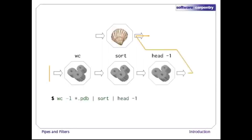And if we run 'wc -l *.pdb | sort | head -1', we get the three processes shown here with data flowing from the files through wc to sort, and from sort through head to the screen.